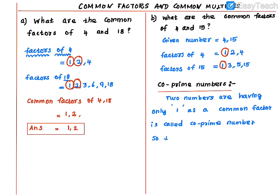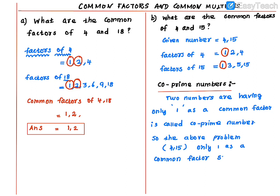So in the above problem, 4 and 15 have only 1 as a common factor. Therefore, 4 and 15 are called co-prime numbers.